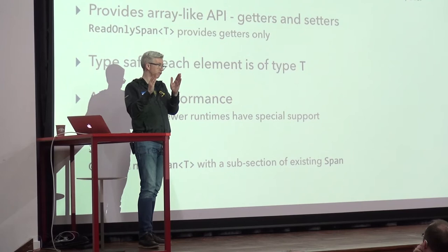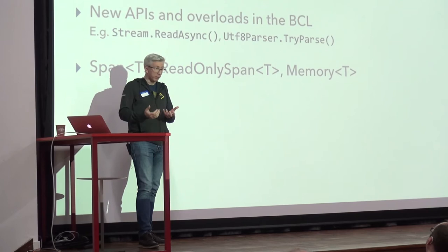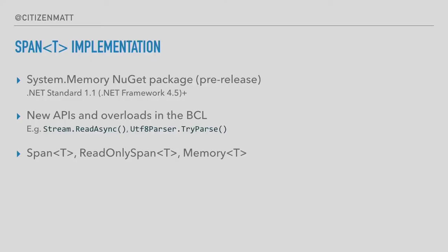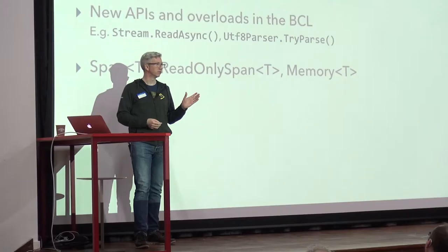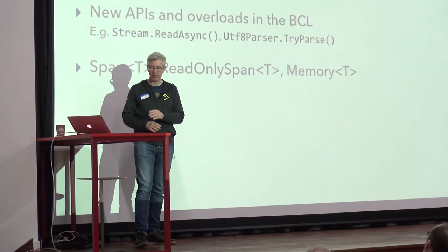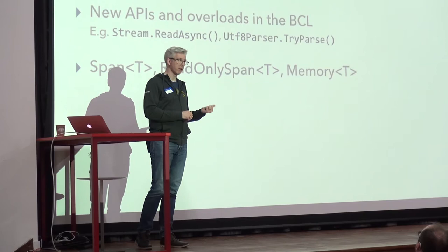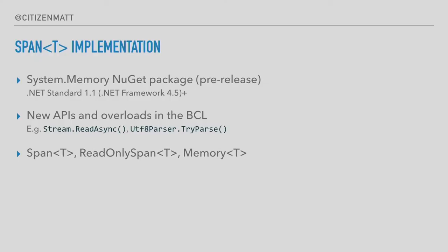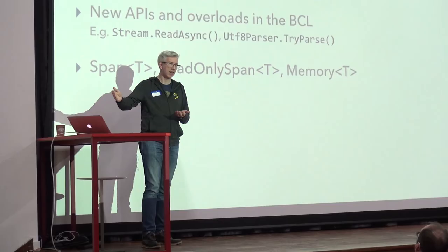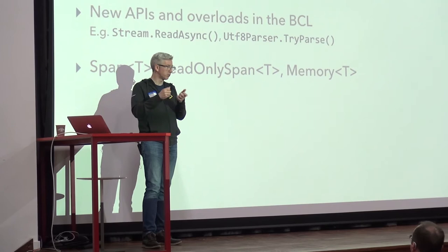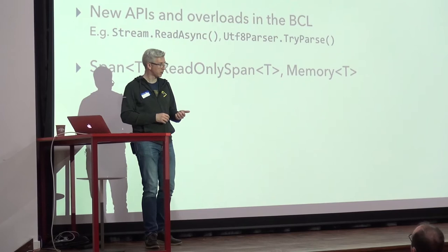It introduces the Span<T> type itself. New APIs and overloads are coming into the base class library — things like `Stream.ReadAsync`. If you can wrap a block of memory and access characters in that array-like structure, reading and writing works perfectly, and slicing within that span lets you do substrings very cheaply. There's also a UTF-8 parser, and things like `TryParse` for integers — you can parse without having to allocate or reallocate. Related types include `ReadOnlySpan<T>` (same memory, no setters) and `Memory<T>` for putting the object on the heap.